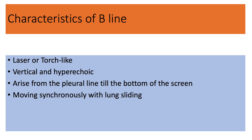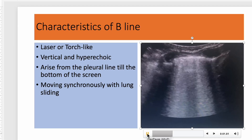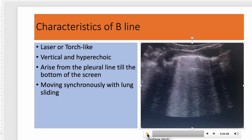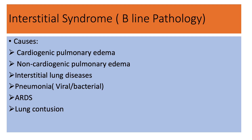What are B lines? B lines are laser- or torch-like vertical hyperechoic lines. They arise from the pleural line, extend to the bottom of the screen, and move in synchrony with respiration. B lines are not always pathological — two or three B lines can be visible in a healthy patient. But if you see more than three B lines in any area, it indicates pathology: you should suspect cardiogenic pulmonary edema, non-cardiogenic pulmonary edema, interstitial lung disease, pneumonia, ARDS, or lung contusion.